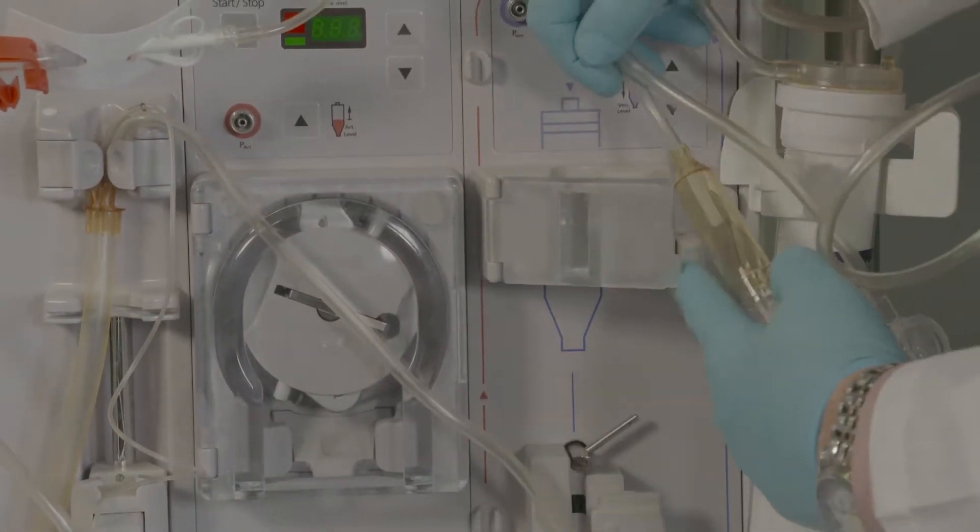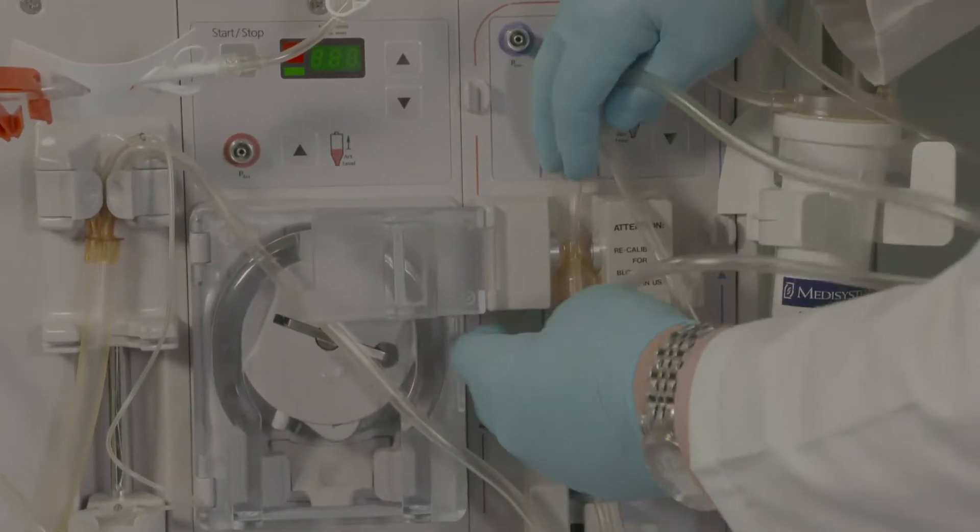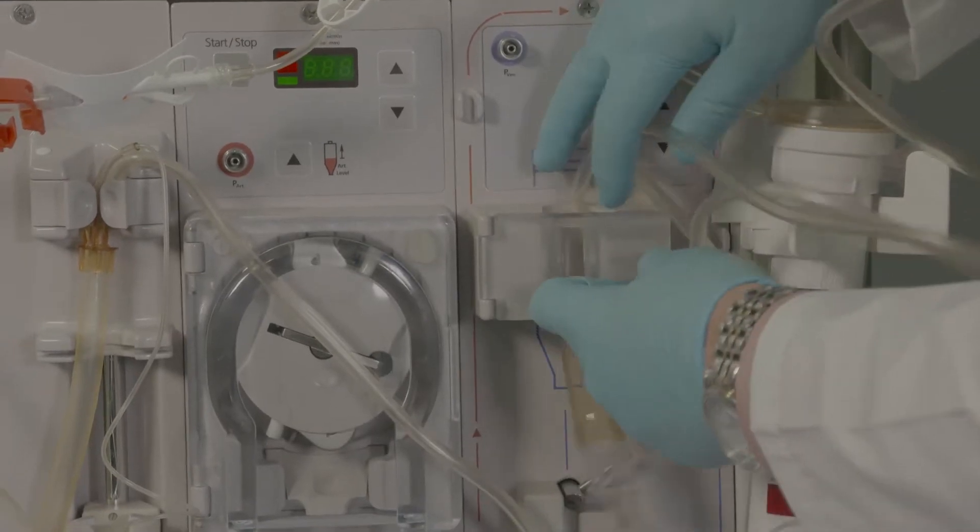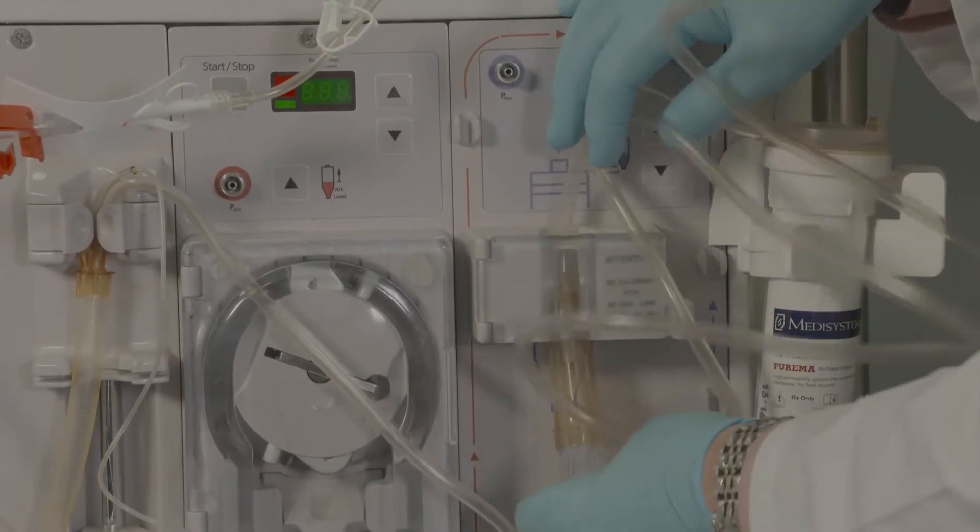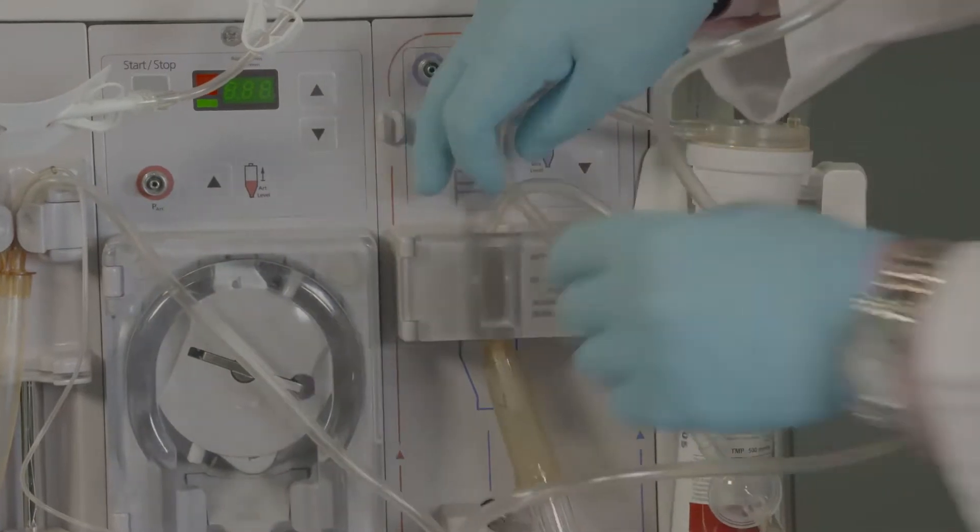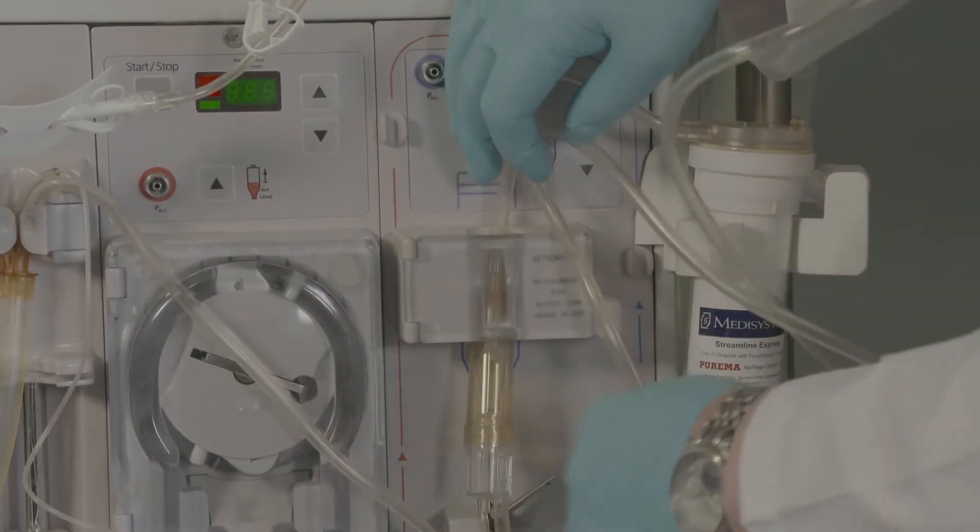Here, SLE is already hung on a Fresenius 2008K dialysis machine in the optimal way to enable air removal. The venous chamber is upside down. The arterial pod is below the heparin line, hanging vertically.